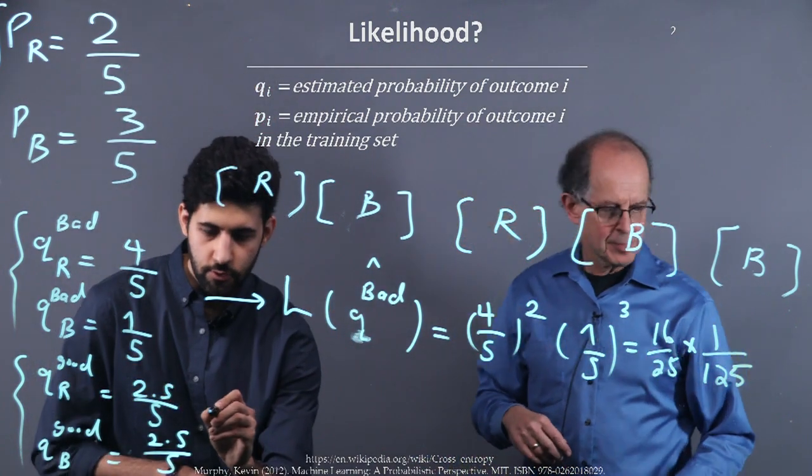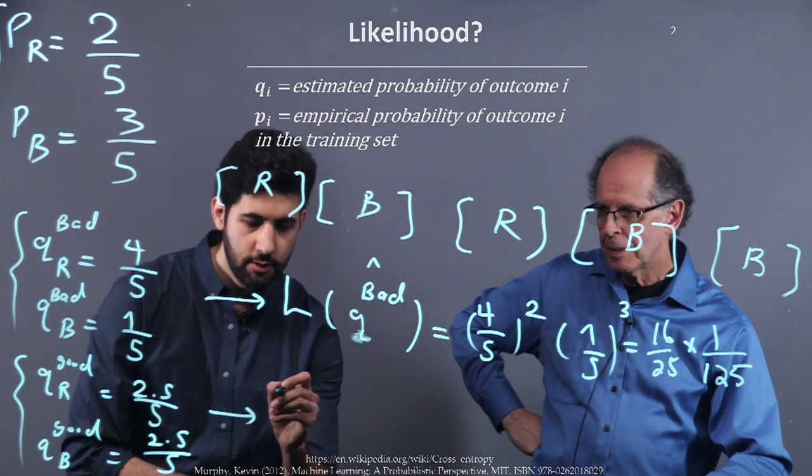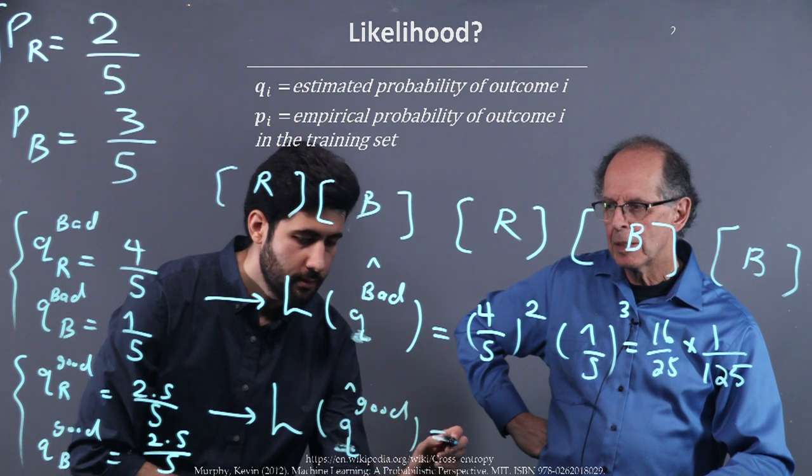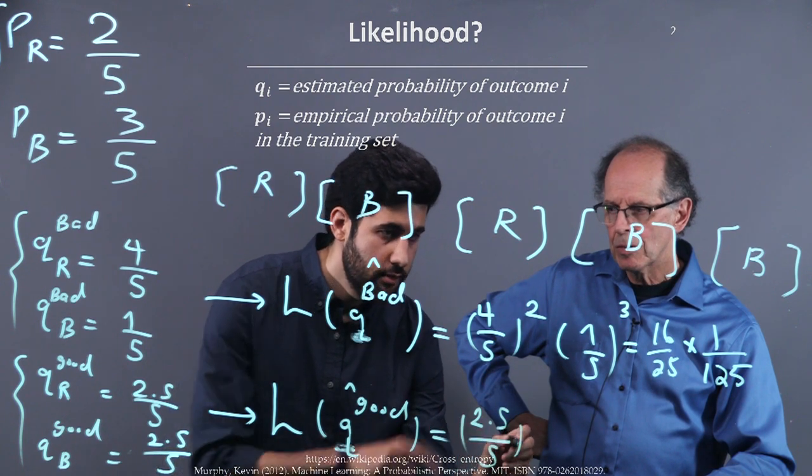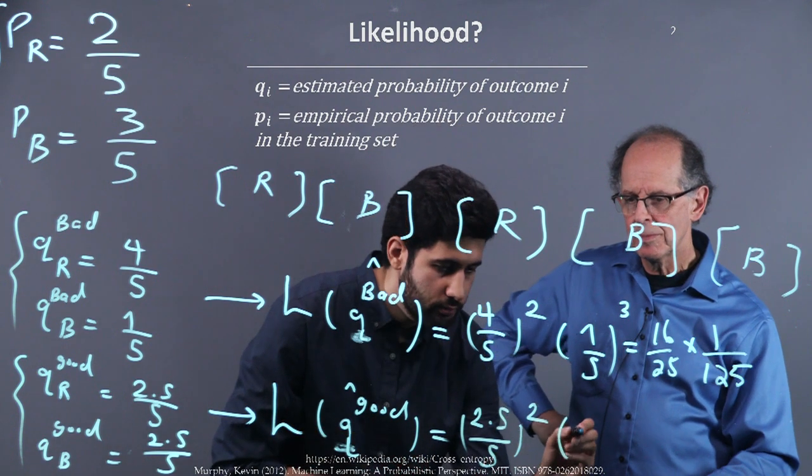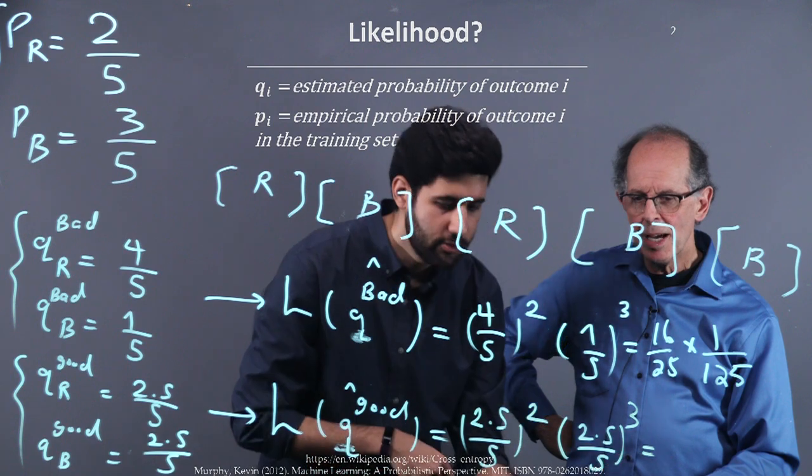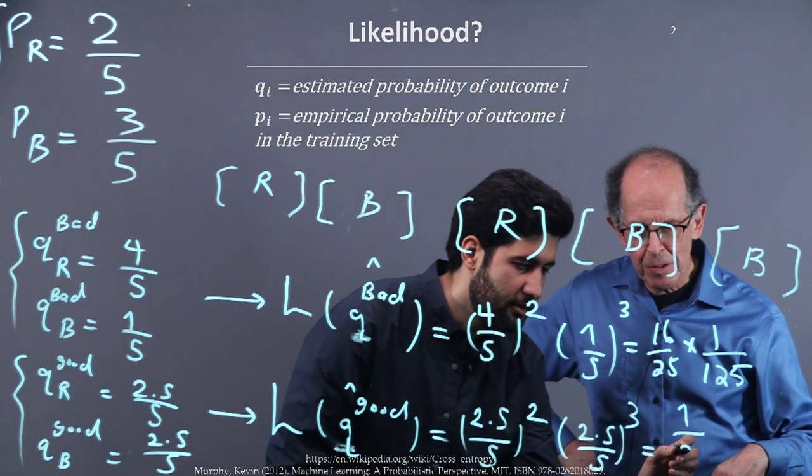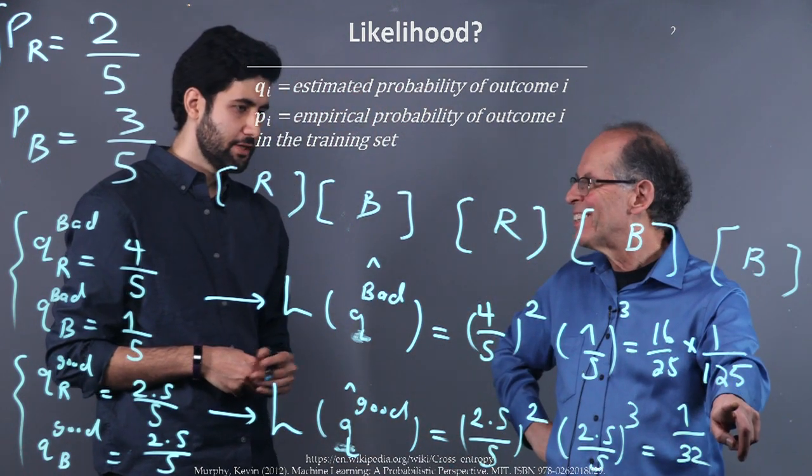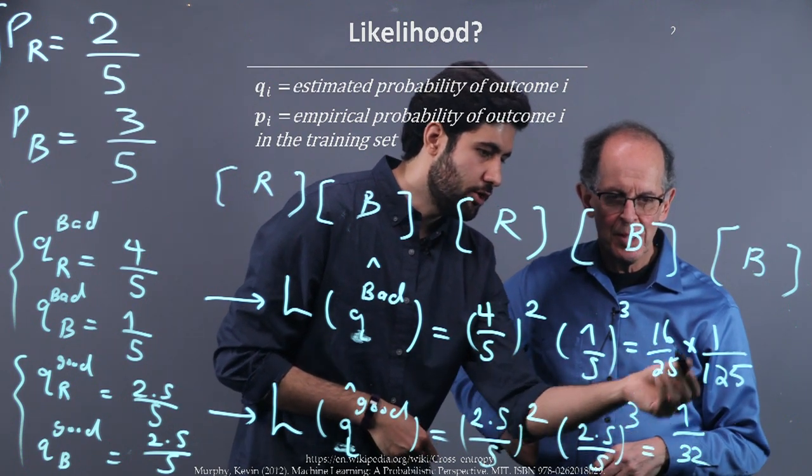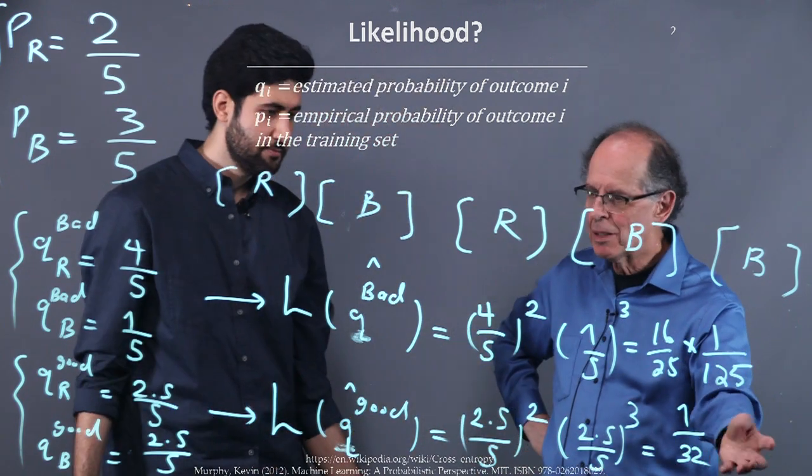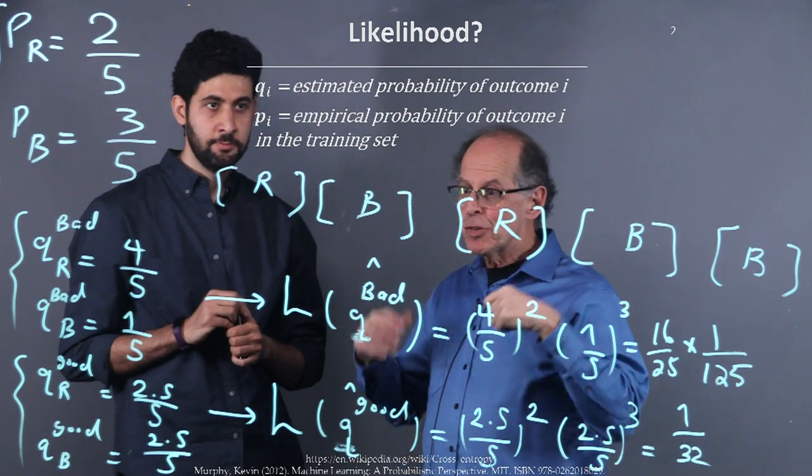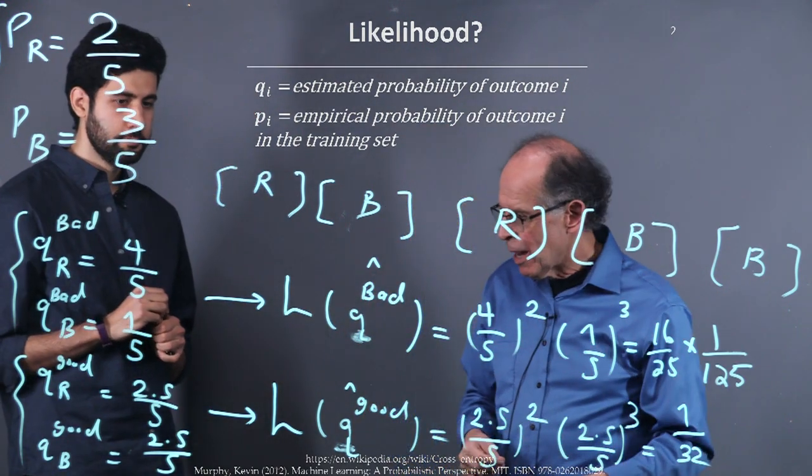Let's try the good likelihood. If we assume this model describes this training set, the likelihood would be Q of good: two and a half over five squared times two and a half over five cubed. This is really great because this is a half squared and this is a half cubed, so it's one over two to the fifth, which is one over 32, which is a lot bigger than this. So this is more likely and it's closer to the original training set.